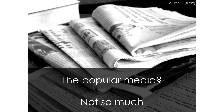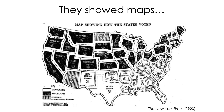In the popular media, not so much. Popular media haven't been making very sophisticated use of data graphics traditionally. To be fair, they've been showing maps for a very long time. This is an electoral map almost 100 years ago. You can notice the dramatic north-south split — Democrats take the south, Republicans take the north.